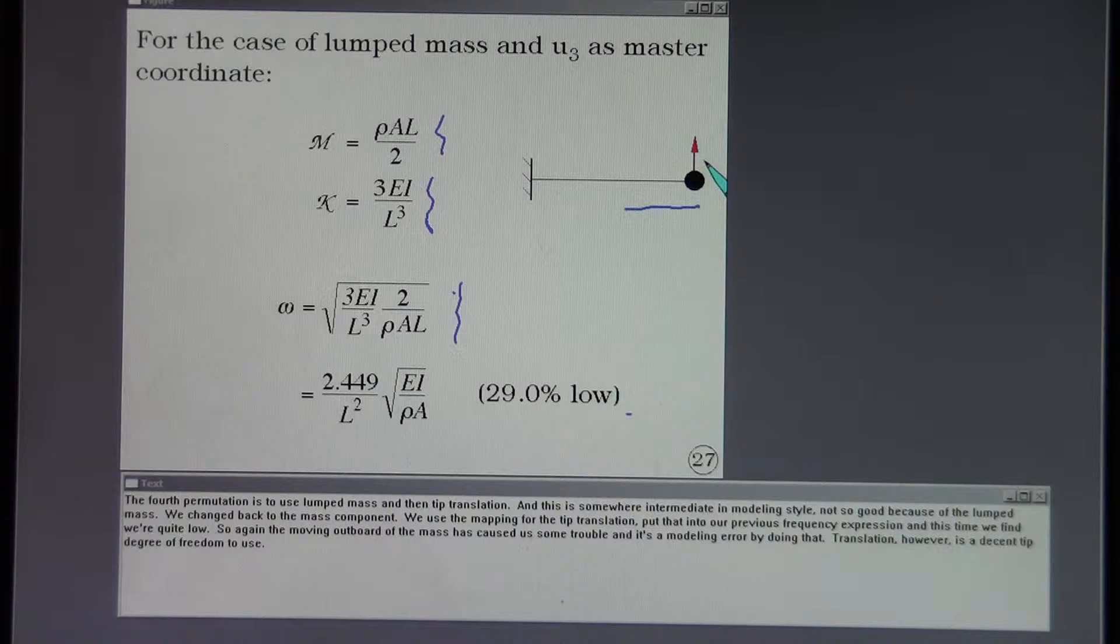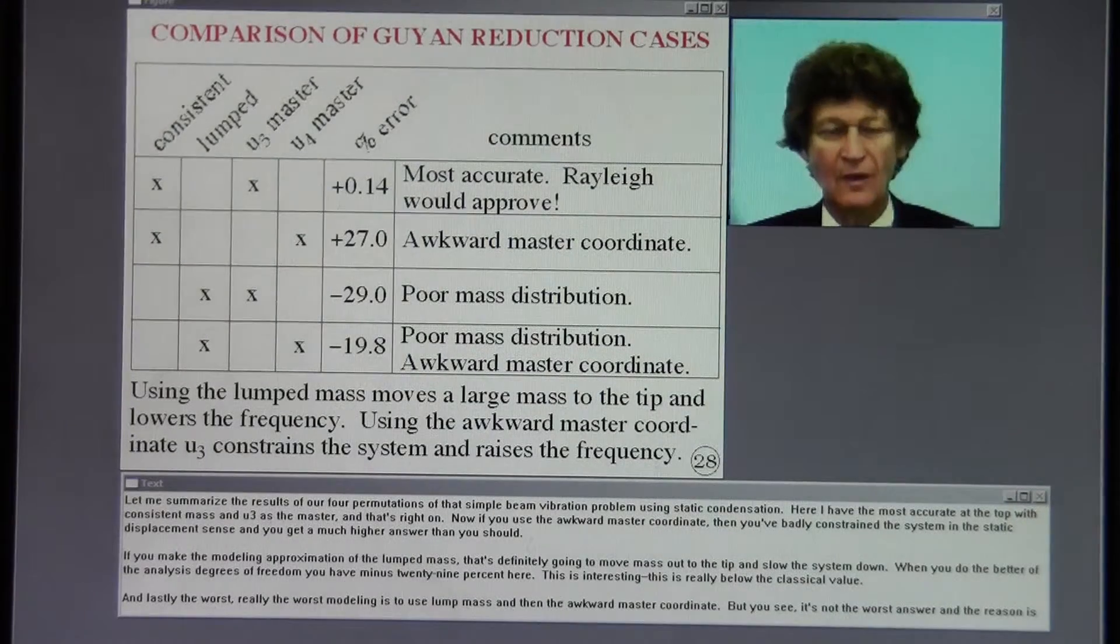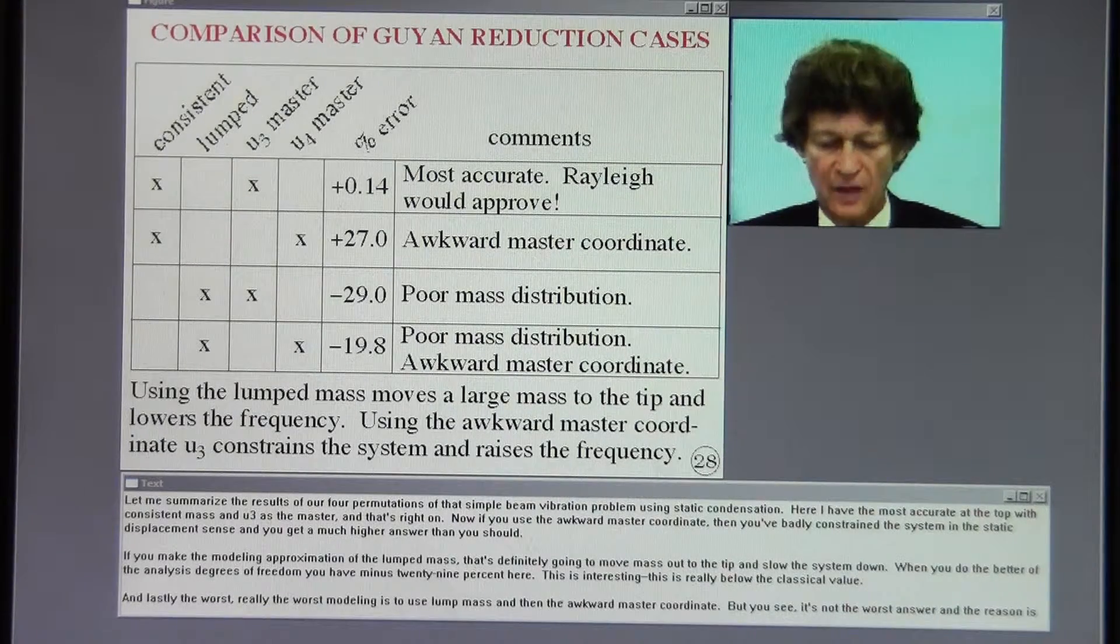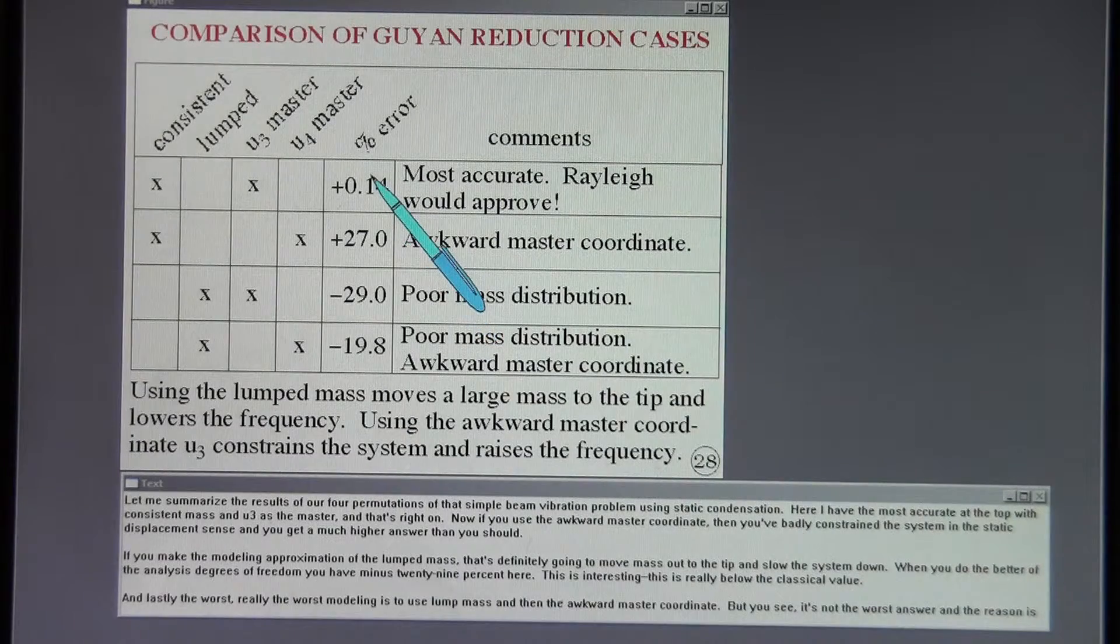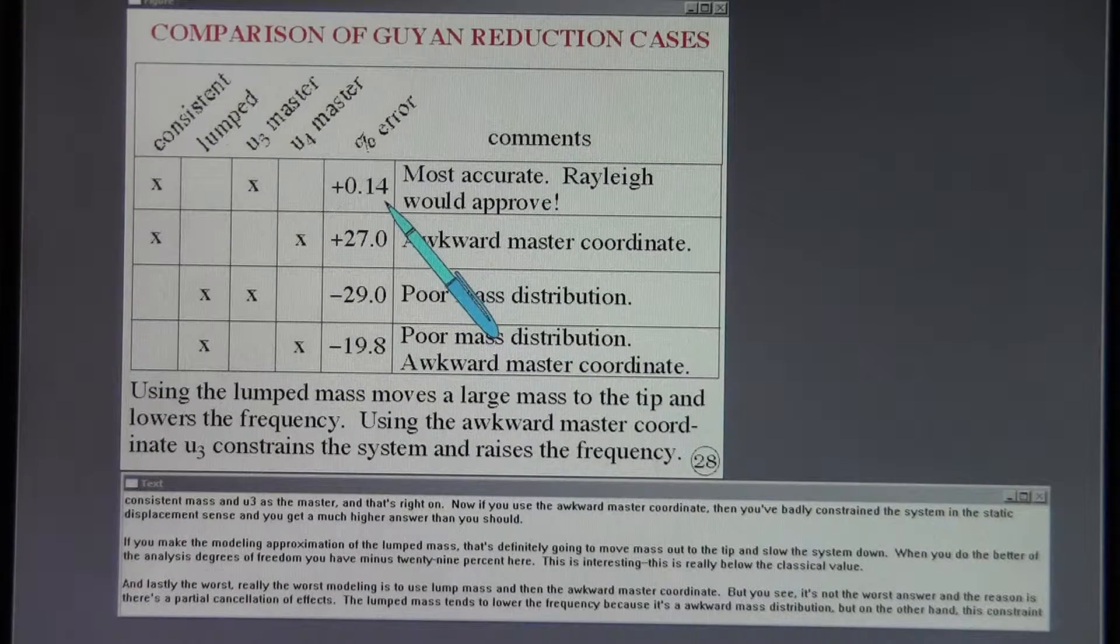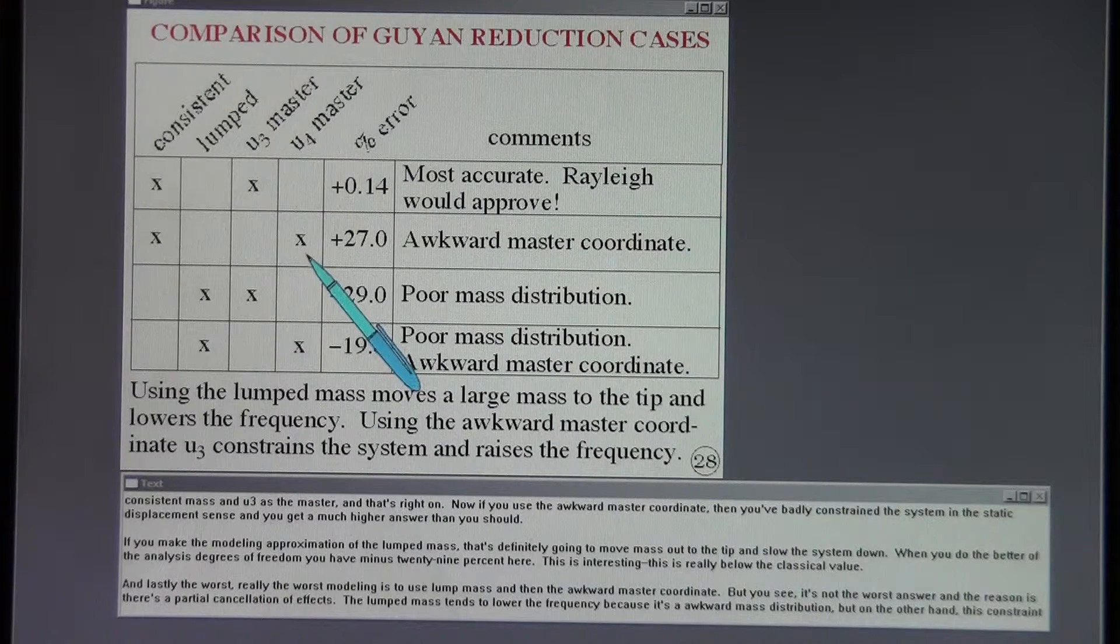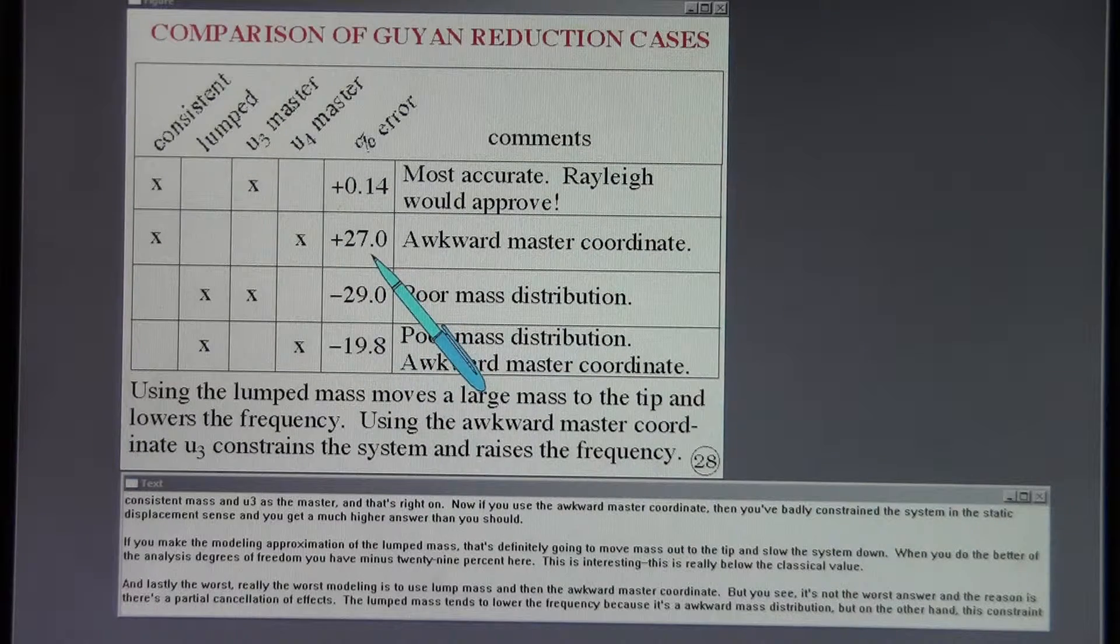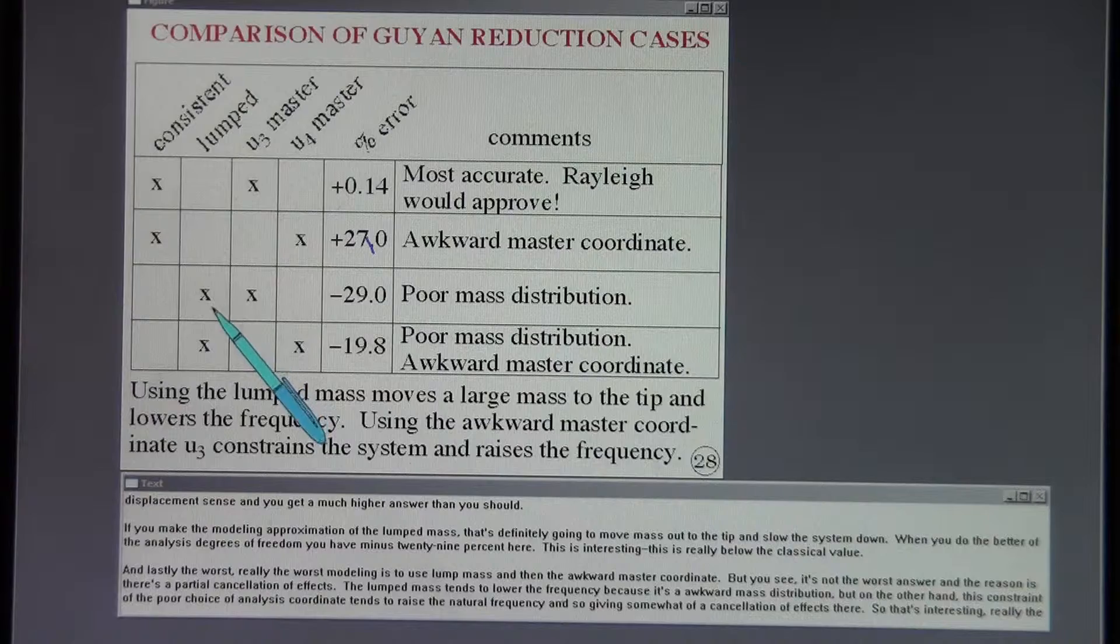Let me summarize the results of our four permutations of that simple beam vibration problem using static condensation. Here I have the most accurate at the top with consistent mass and U3 as the master. And that's right on. Now if you use the awkward master coordinate then you've badly constrained the system in the static displacement sense. And you get a much higher answer than you should. If you make the modeling approximation of the lumped mass that's definitely going to move mass out to the tip and slow the system down.